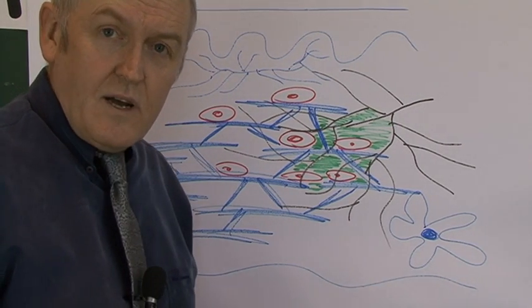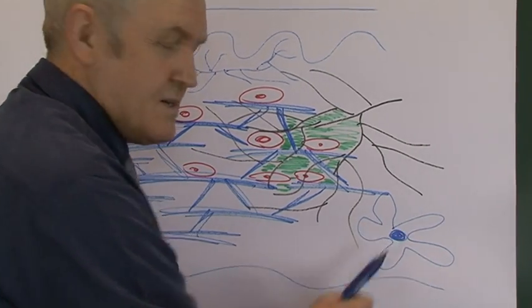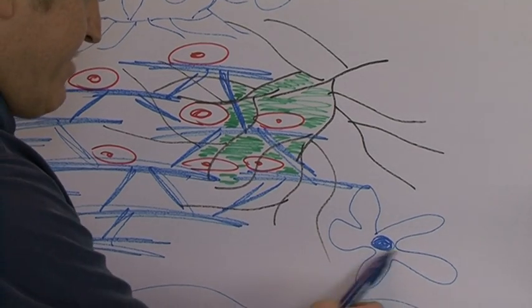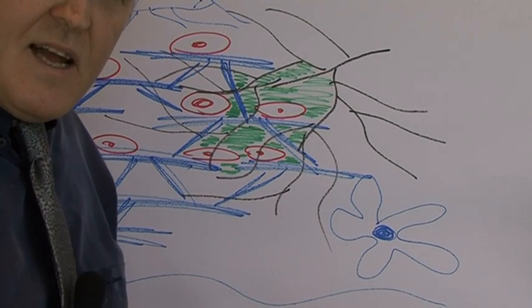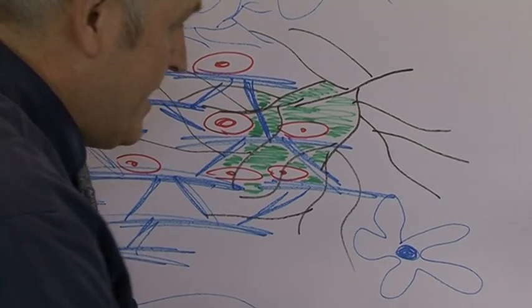They are derived from monocytes from the blood, and they're very important immunological cells. They detect the presence of any antigens, and they communicate with the specific immune system, with the lymphocytes.